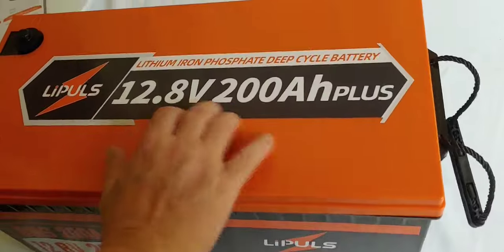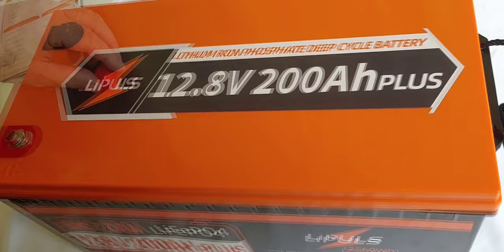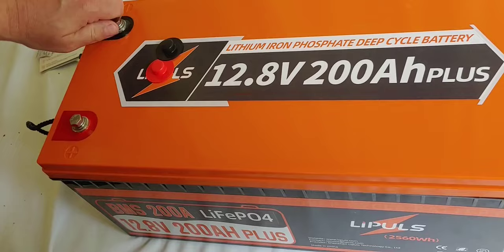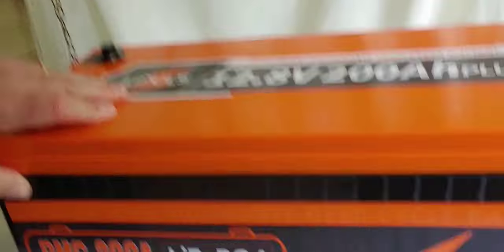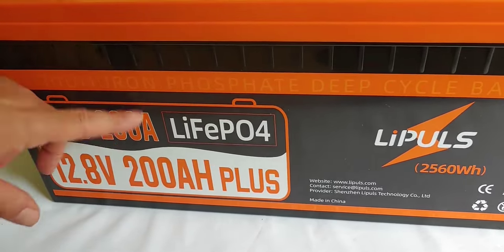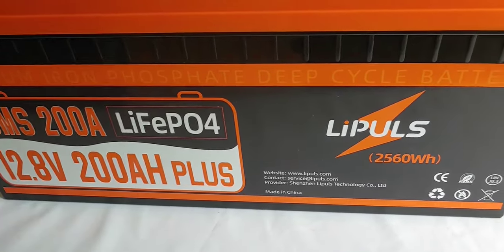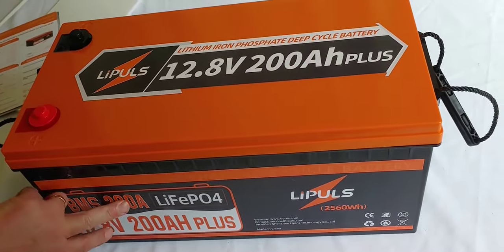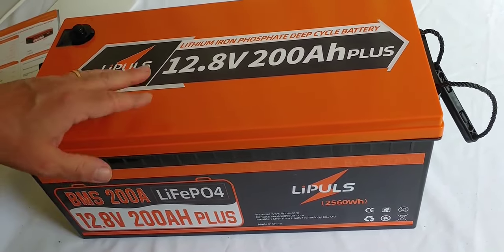It says 12.8 volt, 200 amp hour plus. It's got these protectors on it, but it appears the bolts are already in here, so they ship the bolts on it. It's put together pretty good. The BMS is also 200 amp, which is good. Probably why they call it plus. A lot of these inexpensive batteries you buy, the BMS is only going to be 100 amps. So having actually 200 is going to be pretty good.